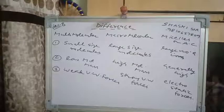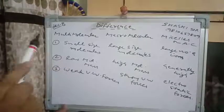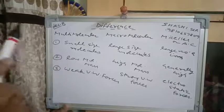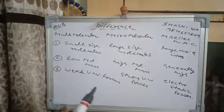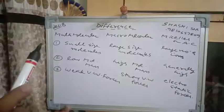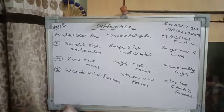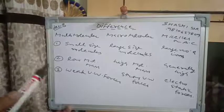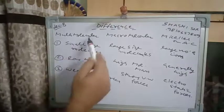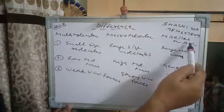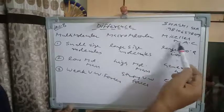Today we are starting with lecture 8 of surface chemistry. In the last class we discussed classification of colloids — the first classification was on the basis of physical state of the dispersed phase and dispersion medium, and the second was type of colloidal particles. Now the third classification is based upon the type of interaction between dispersed phase and dispersion medium — the difference between multi-molecular, macromolecular, and associated colloids.